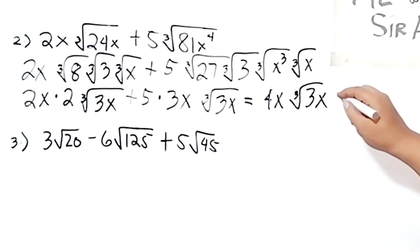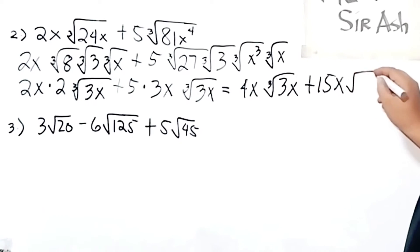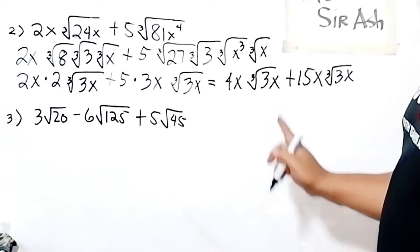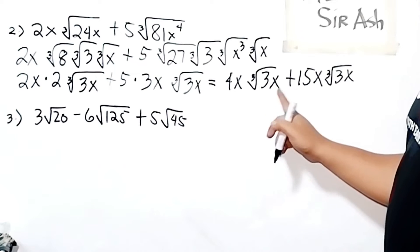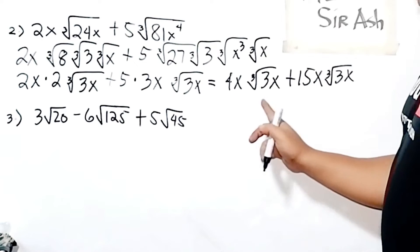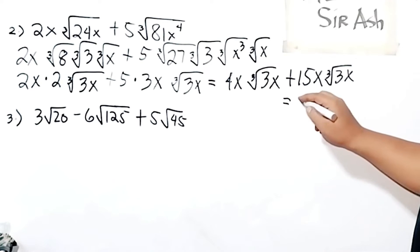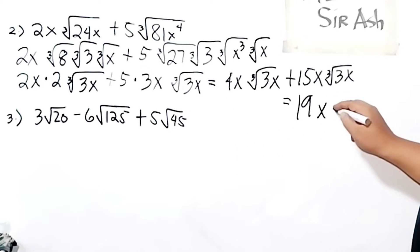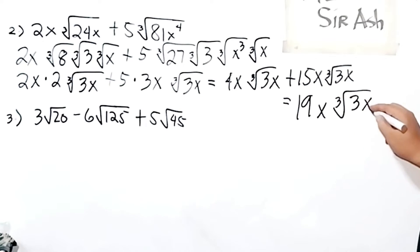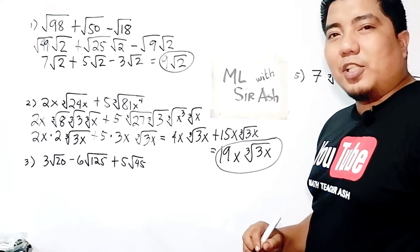5 times 3x gives 15x cube root of 3x. As you can see, cube root of 3x and cube root of 3x are the same, so we can add 4x and 15x, giving us 19x cube root of 3x. And this will be your final answer.